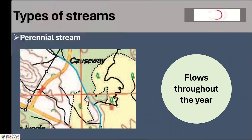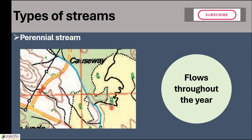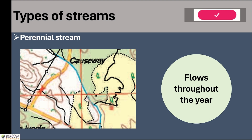Before we start learning drainage pattern, let us understand three different types of streams in our topographical map. The first category is called perennial streams — streams that flow throughout the year, meaning streams that contain water all year are called perennial streams. These streams are drawn using blue lines. We have to be careful because there are also canals in our study area which are also given in blue color.